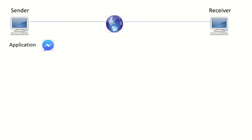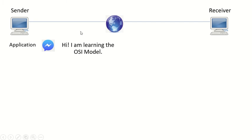In this example we are going to use Facebook Messenger. The sender is on the top right, connected to the internet — the globe represents the internet. We also have the receiver, who is also connected to the internet. Using the Facebook Messenger application, let's say I want to type something like: 'Hi, I'm learning the OSI model.' When I hit send on the Facebook Messenger app...